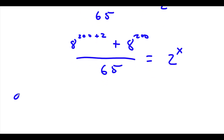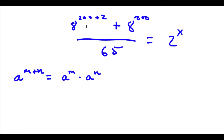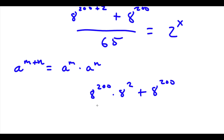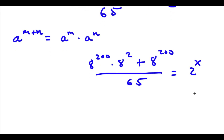If I have something in the form a to the power of m plus n, this is equal to a to the power of m times a to the power of n. So in this case, a to the power of 200 plus 2 is going to equal 8 to the power of 200 times 8 to the power of 2. Now I have this plus 8 to the power of 200 over 65 is equal to 2 to the power of x.